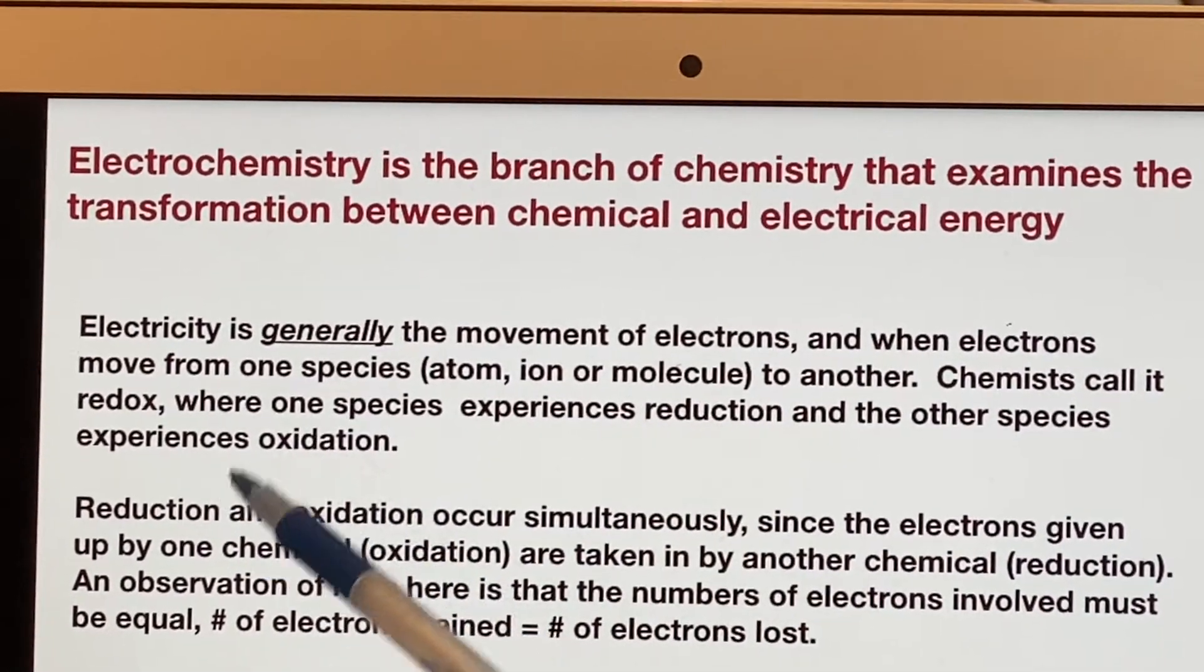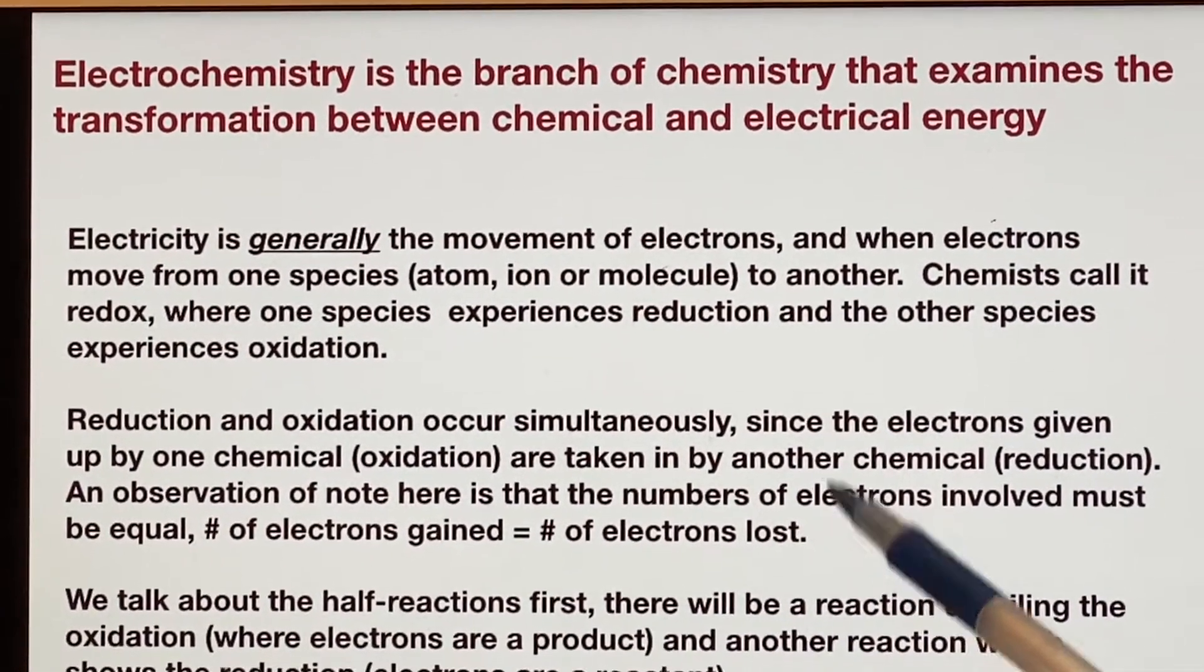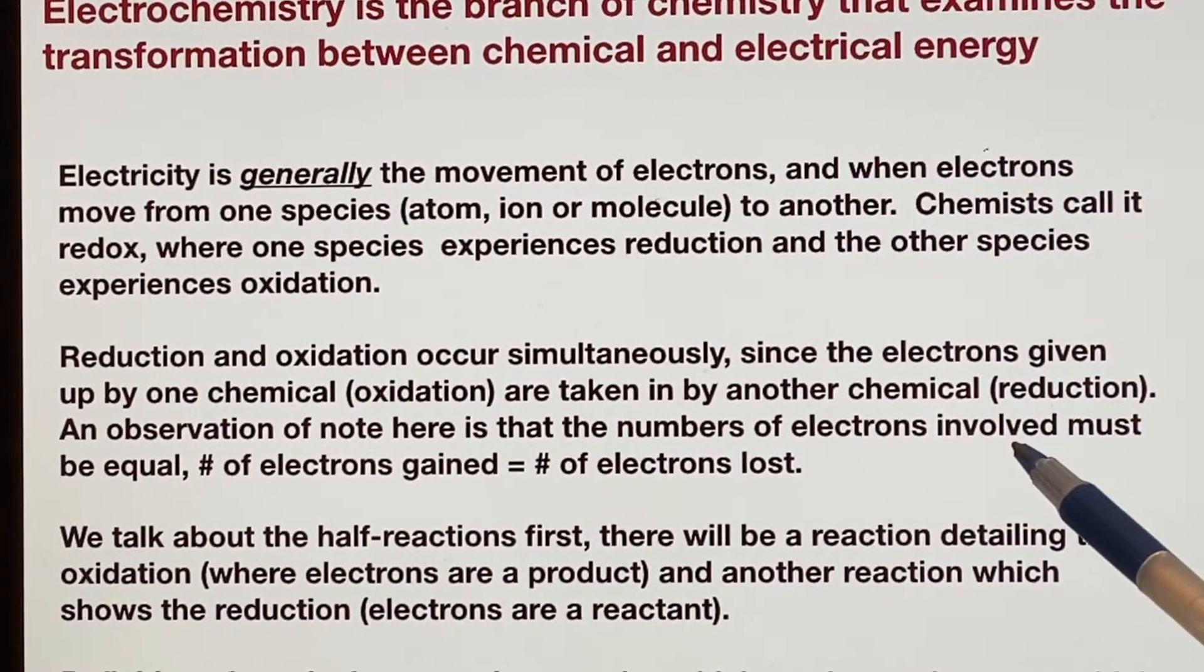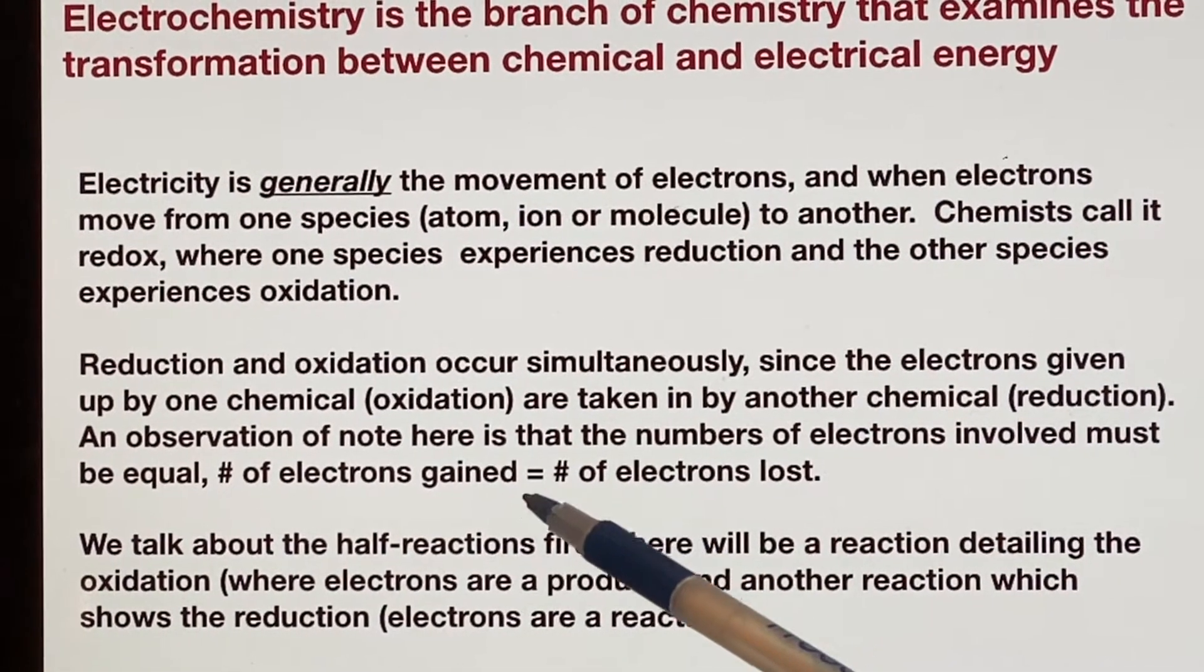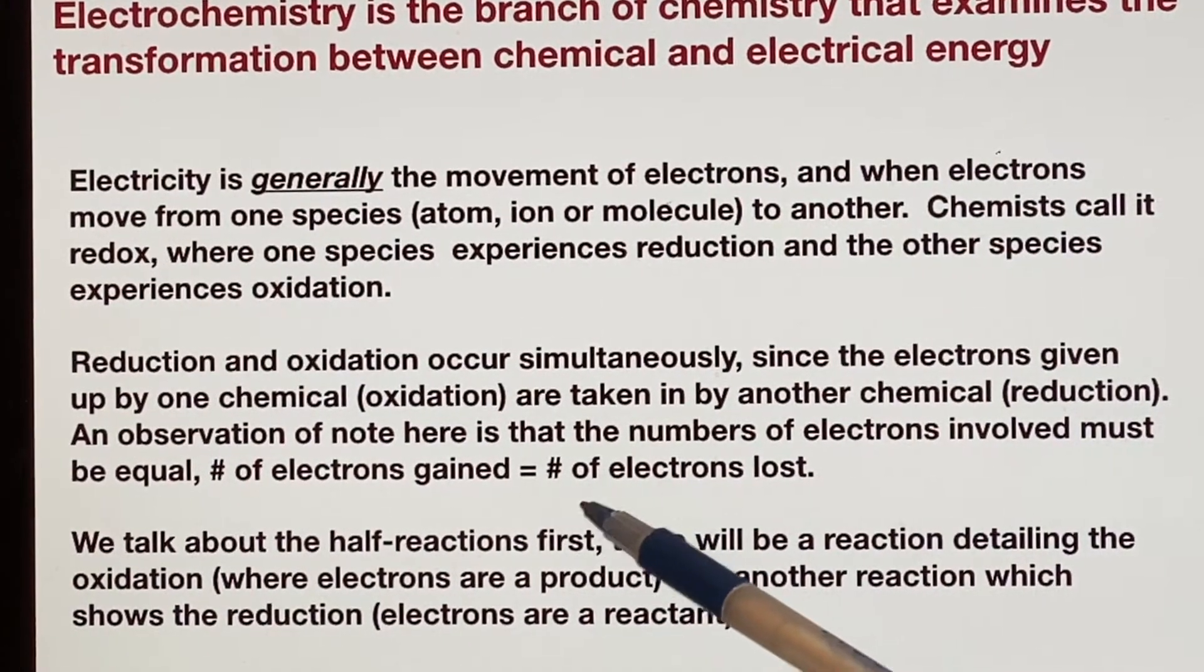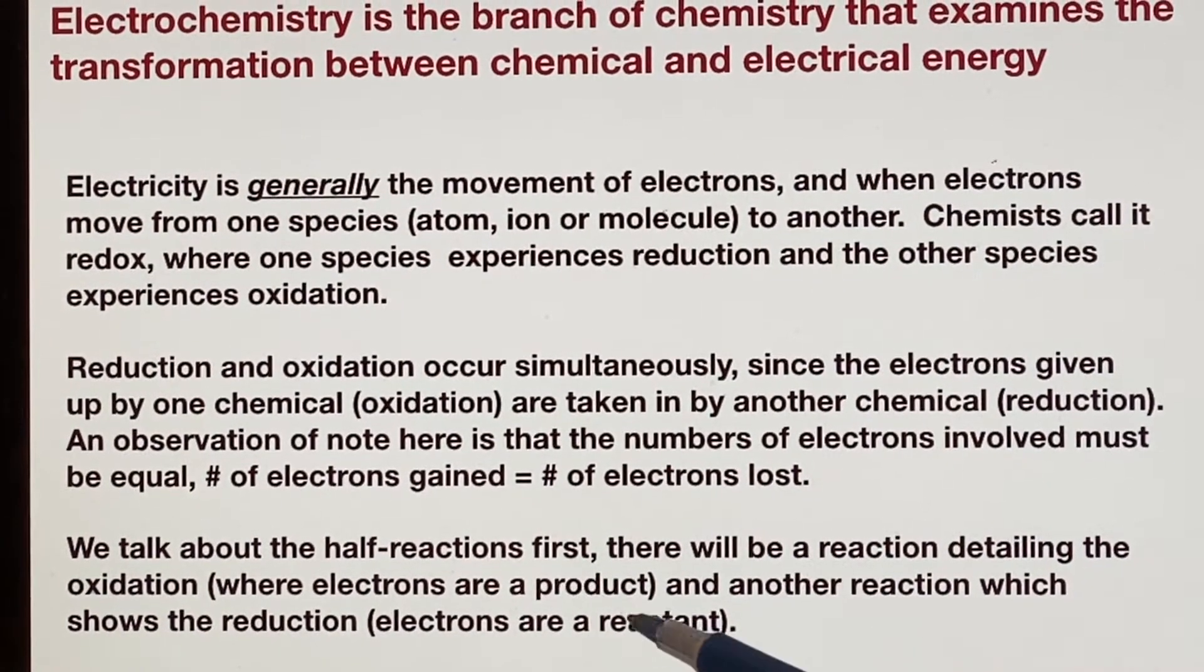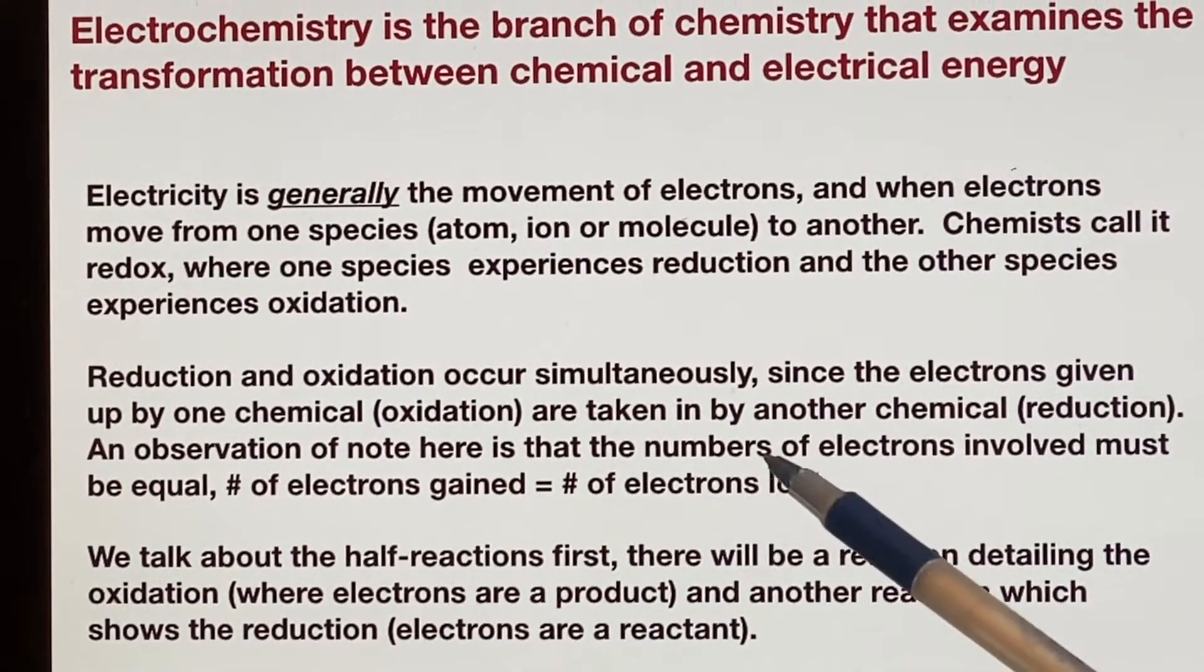Reduction and oxidation for chemists all have to occur simultaneously, because electrons given up by one thing will be taken in by another. They've got to be equal because you've never seen lightning in an aqueous solution inside of your beaker. It does not happen.